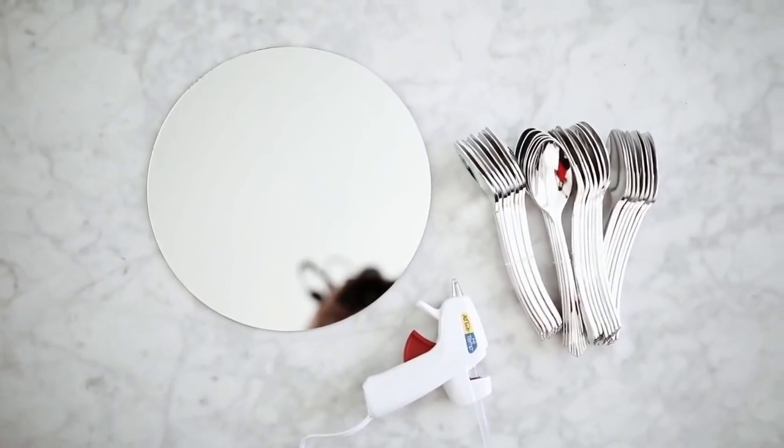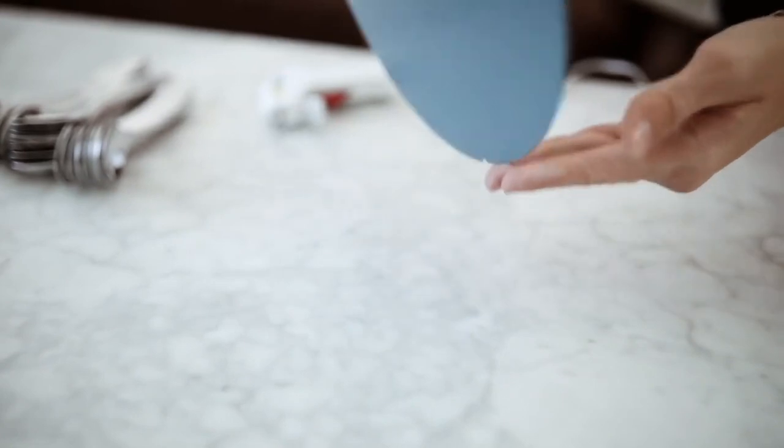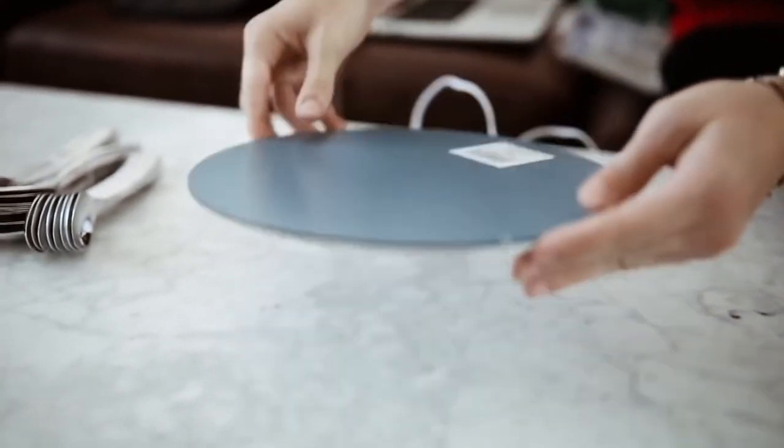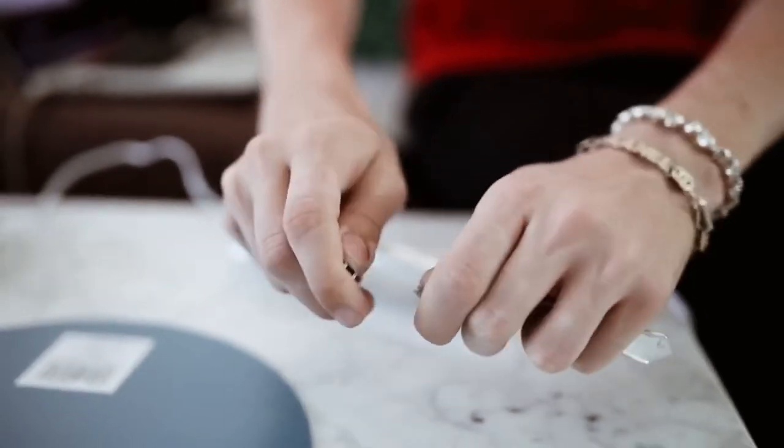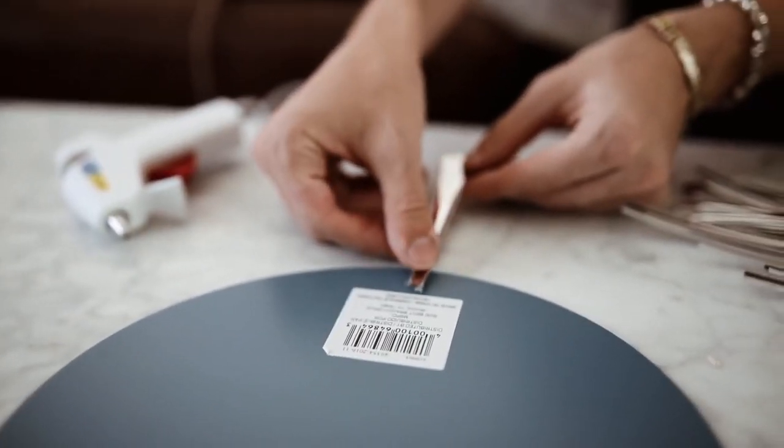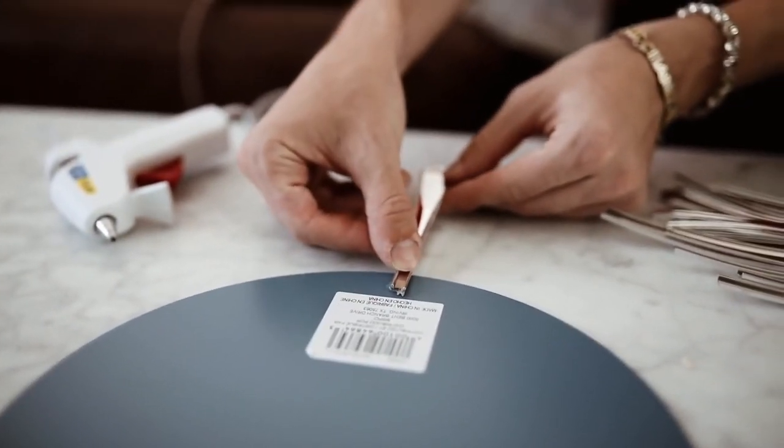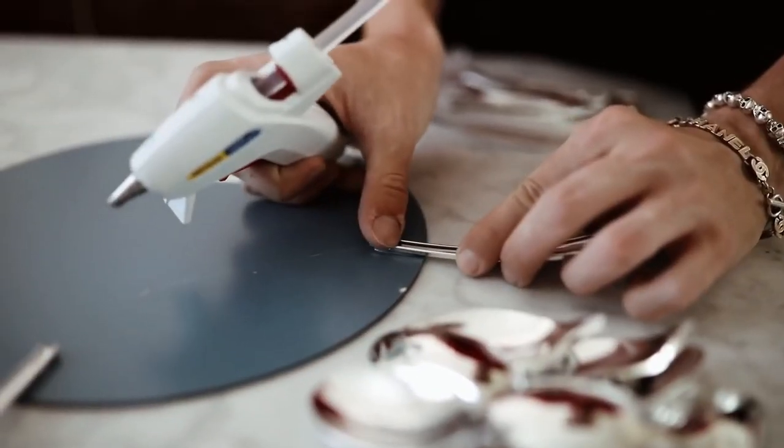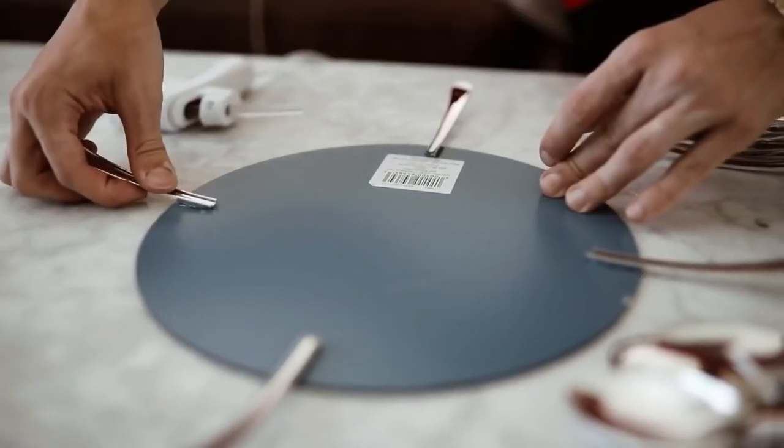This next project was a really fun one where I ended up using silverware. This is just plastic silverware from the dollar store along with a 12 inch circle base. I went ahead and broke all of my spoons more towards the actual round part of the spoon, that way we had a longer handle section which we can actually glue onto the outside back of the mirror.